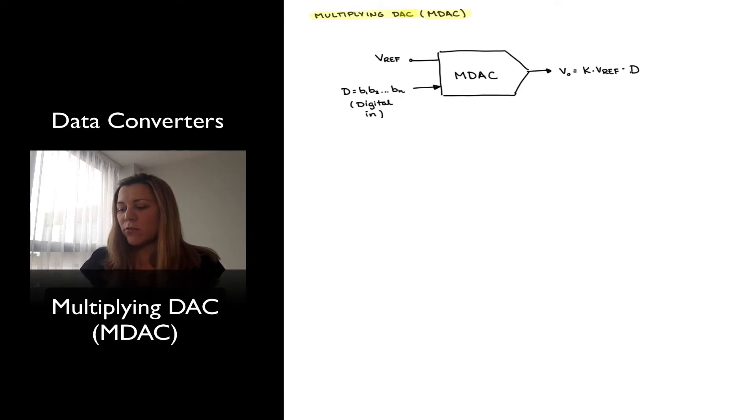Now notice that the MDAC also has a reference signal, it has a digital input word, and it has an analog output signal. The difference between the MDAC and all the other DACs we have studied is that in all the previous cases, the reference voltage was a steady voltage. It was just a constant voltage, which sometimes represented the full-scale voltage or some multiple of it.